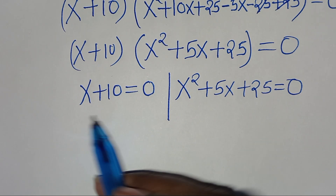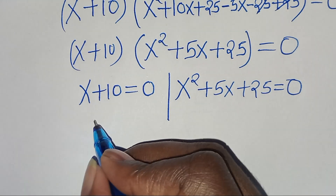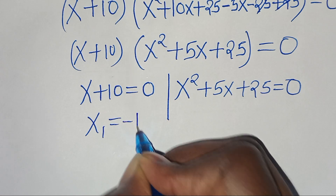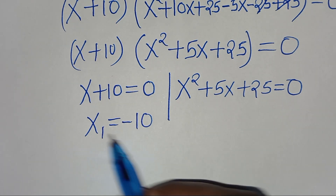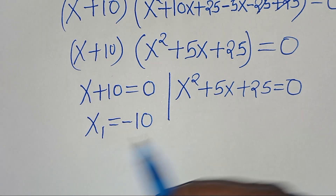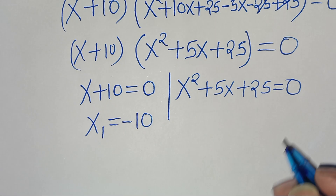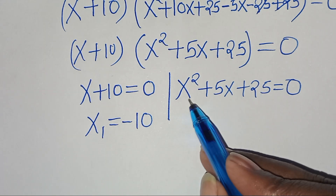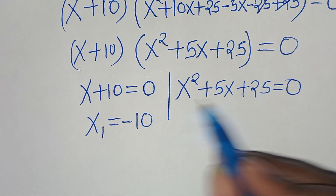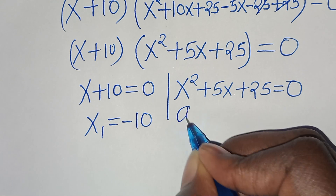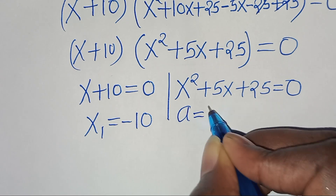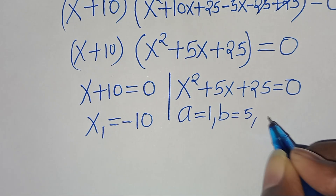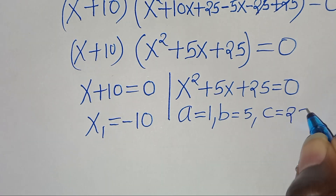From the first part, x equals minus 10, which is a real solution. Now let's determine the other values of x from the quadratic equation x squared plus 5x plus 25 equals 0. We have a equal to 1, b equal to 5, and c equal to 25.